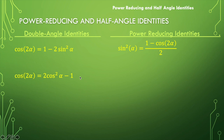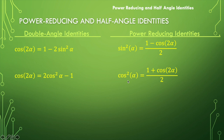Similarly, if we solve for cosine squared of alpha we would add 1 and divide by 2, and we would end up with: 1 plus cosine of 2 alpha divided by 2 equals cosine squared of alpha.